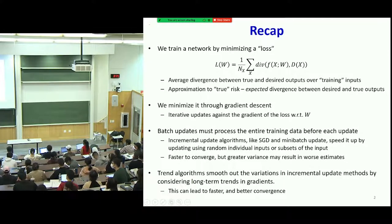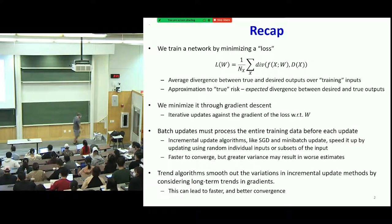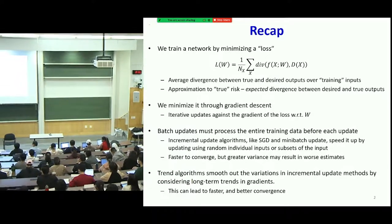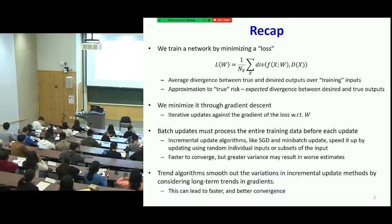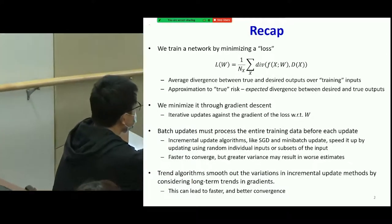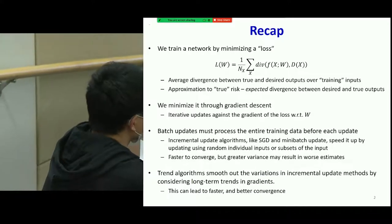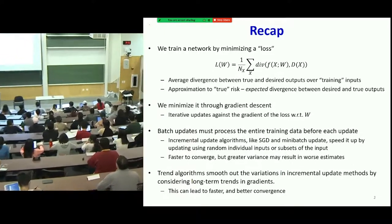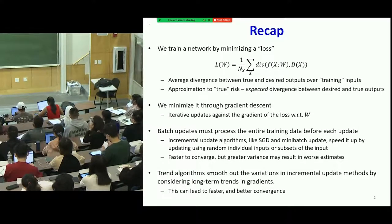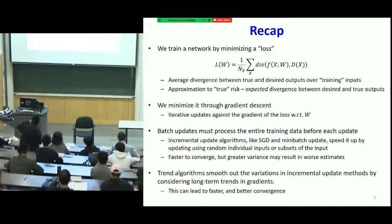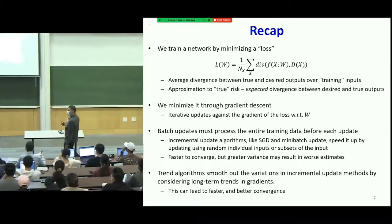Here's where we were so far. We've learned that you train a neural network by minimizing a loss, which is the average divergence between the true output of the network and the desired output, which is an approximation to the true risk. We minimize this using gradient descent. Batch updates must process the entire training data before each update, which can be very expensive. So we perform incremental updates such as with SGD or mini-batch, which is faster to converge but may have greater variance. Trend algorithms like momentum smooth out variations in the incremental update by considering long-term trends in gradients, leading to faster and better convergence.